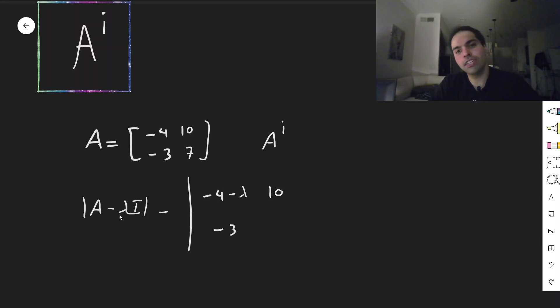And that becomes minus 4 minus lambda, 7 minus lambda, and then minus minus, which becomes plus. The whiteboard is weird today. So plus 30.